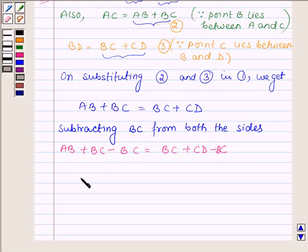So subtracting BC, which implies AB is equal to CD. Subtracting equals from equals.